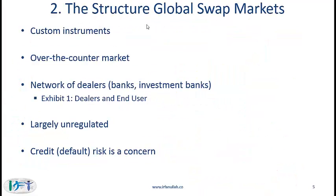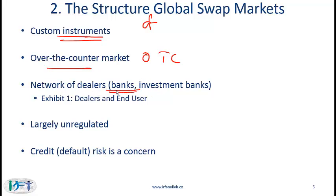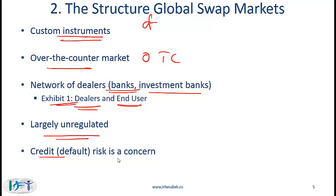Regarding the structure of global swap markets: swaps are custom instruments traded in the over-the-counter market. As with forward markets, we have a network of dealers which are generally large international banks and investment banks. You can look at Exhibit 1 in the curriculum for a list of major dealers and end users for different types of swaps. This is a largely unregulated market; credit risk or default risk is a concern, but since these institutions are quite credit-worthy, default risk is generally low.